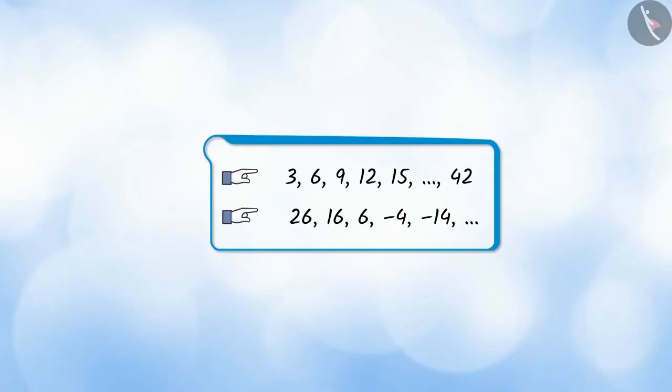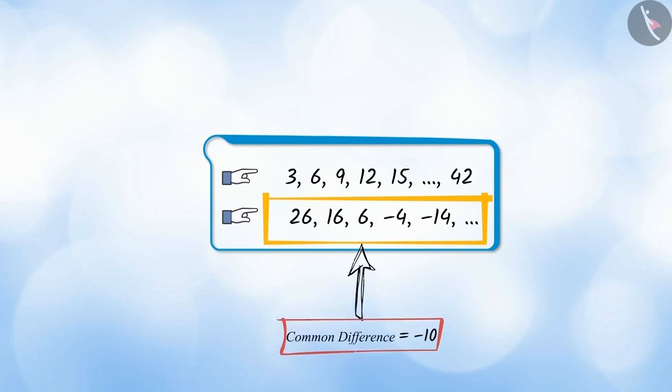We are given two categories here, where the first term of the first category is 3 and the common difference is also 3. And the first term in the second category is 26 and the common difference is minus 10.